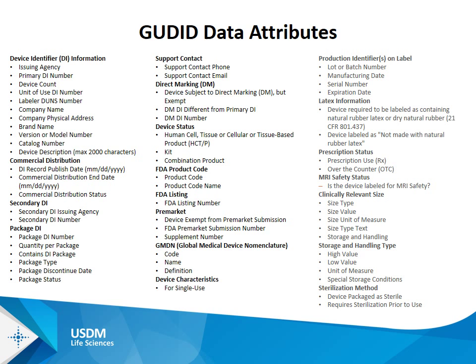Moving on to slide 8 — this is a list of the attributes described in more detail in what was Appendix B. It breaks down each of the elements into their discrete attributes. For example, it's not just collecting the primary device identifier number — you first have to tell the system which issuing agency it's coming from, then you give the device identifier number. Not each of these attributes will be required for each record; many are conditional on the particular type of product.